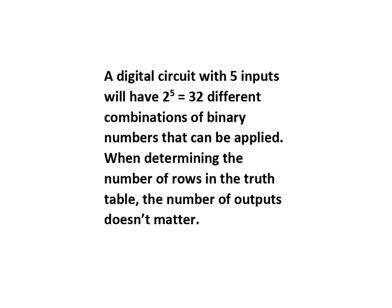A digital circuit with five inputs will have 32 different combinations of binary numbers that can be applied. When determining the number of rows in the truth table, the number of outputs doesn't matter.